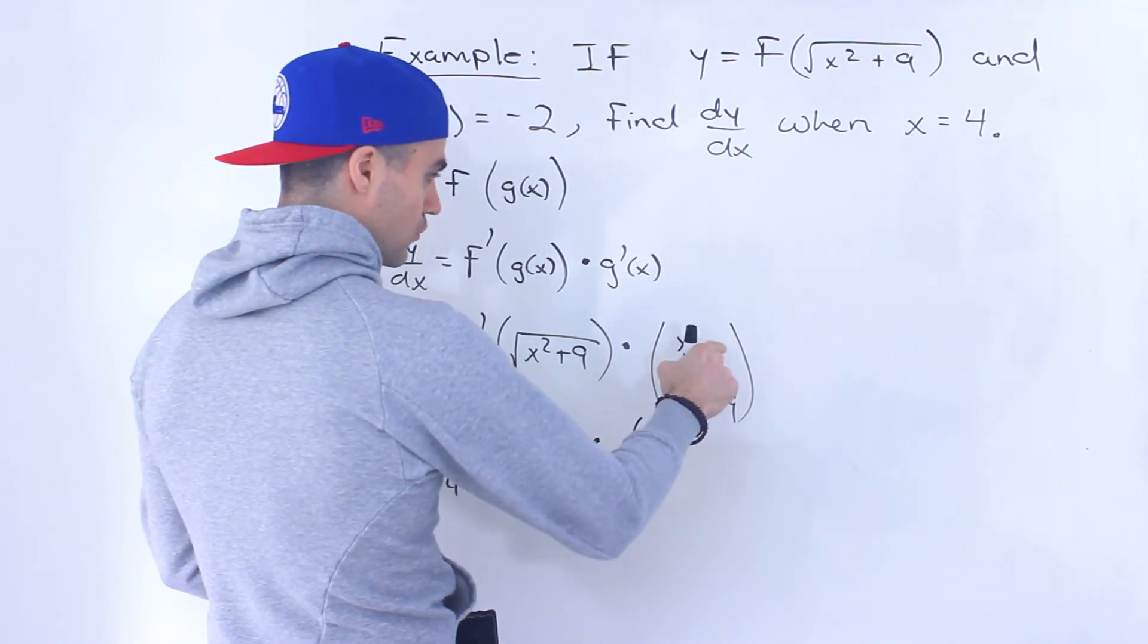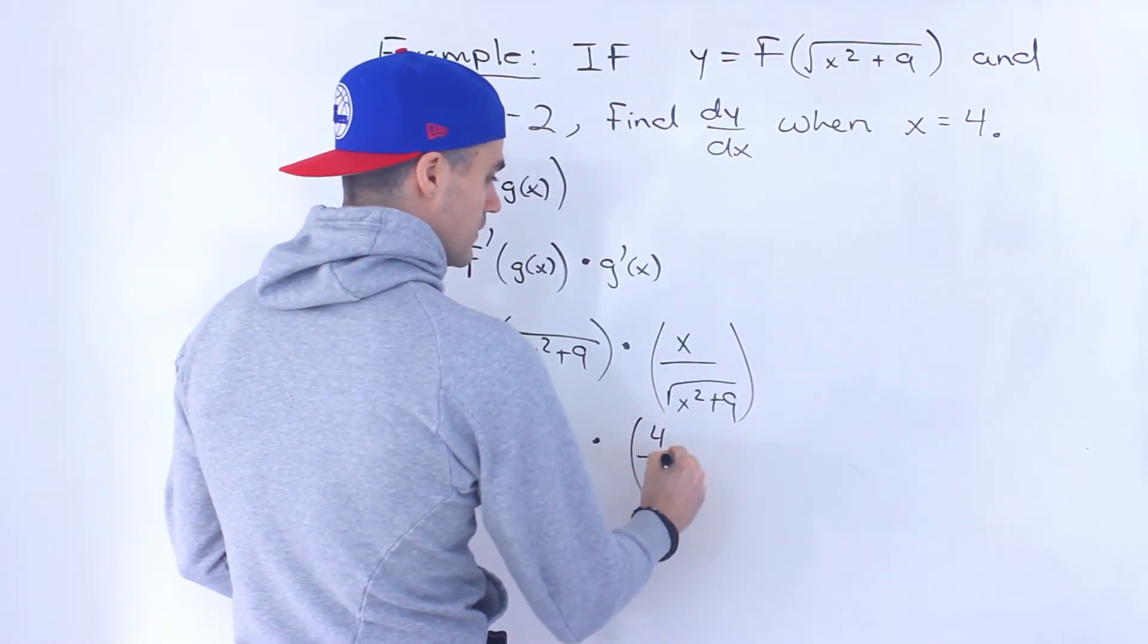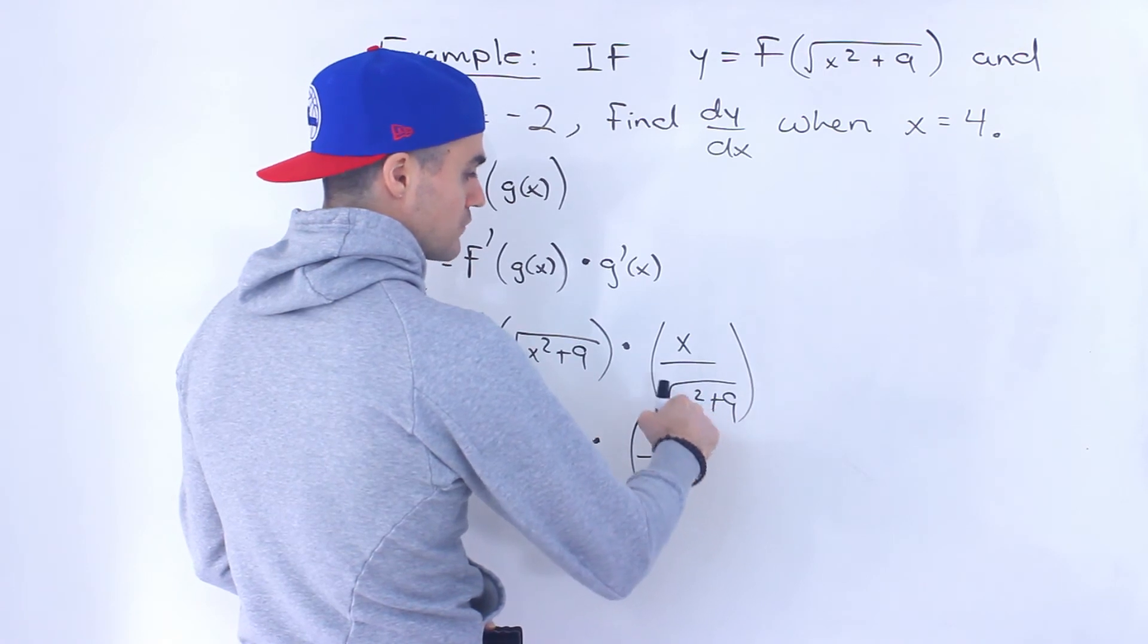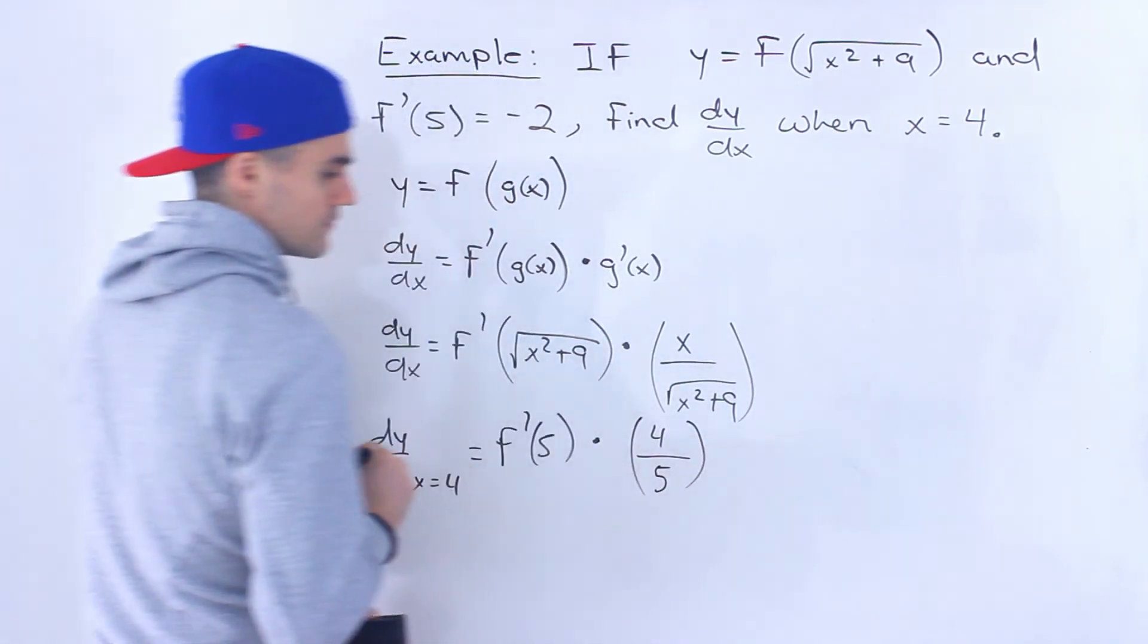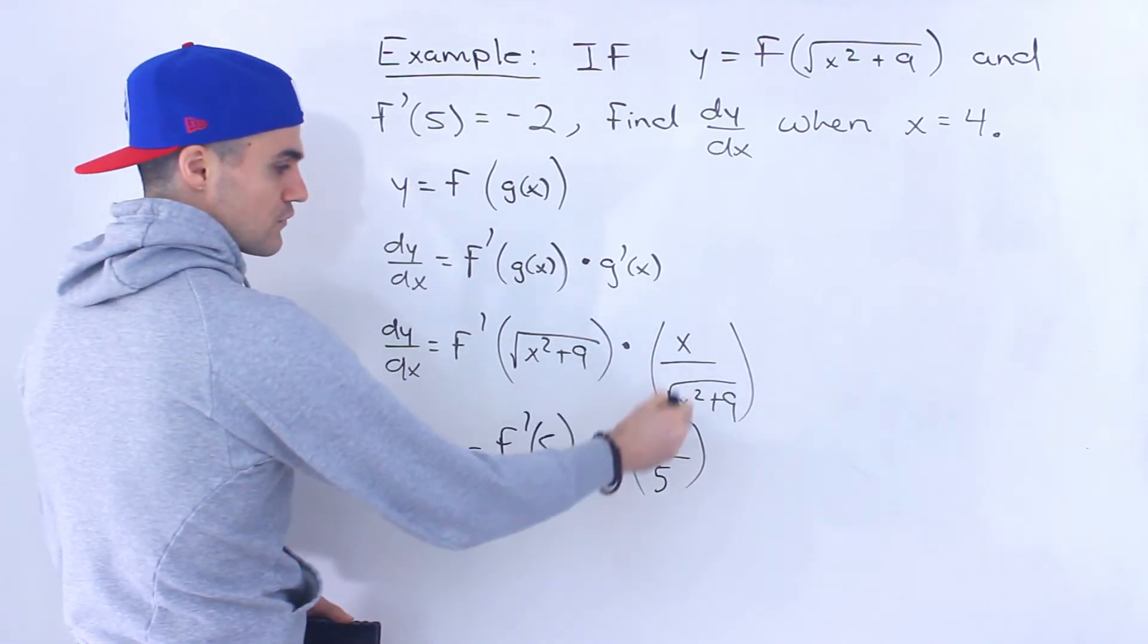So we would end up having f prime of 5 here times, if we plug in 4 over here, we'll have 4 at the top, and then 4 to the power of 2 is 16 plus 9 is 25. Square root of 25 is 5. So this would be 5, like that. So this ends up being 4 over 5.